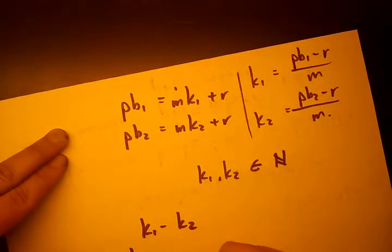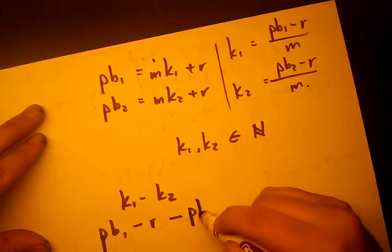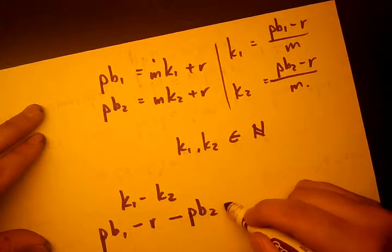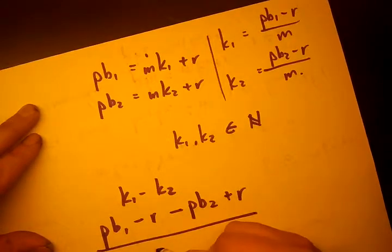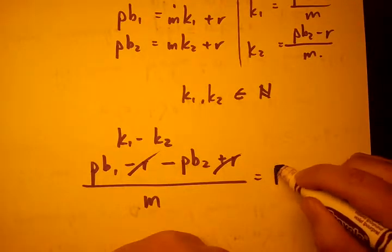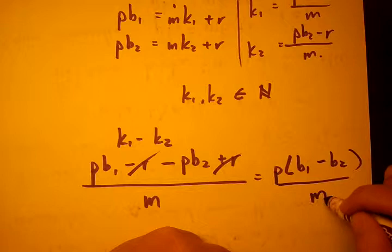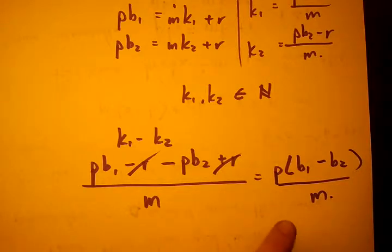It's going to be P times B1 minus R, and I'm going to subtract this. So it's going to be minus P times B2 minus negative R is plus R over M. Our R's cancel out. And we get P times B1 minus B2 over M. And that has to equal some natural number, because K1 minus K2 is a natural number.